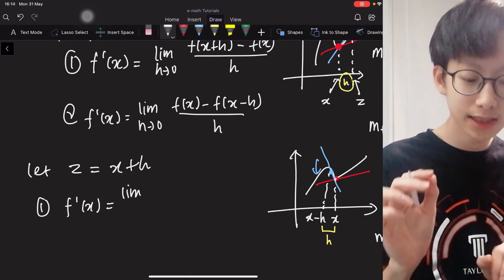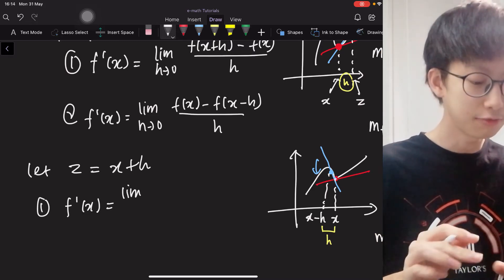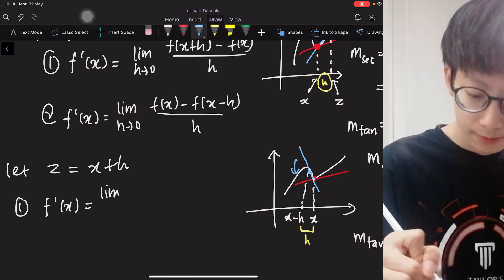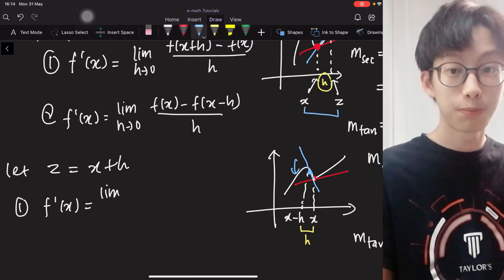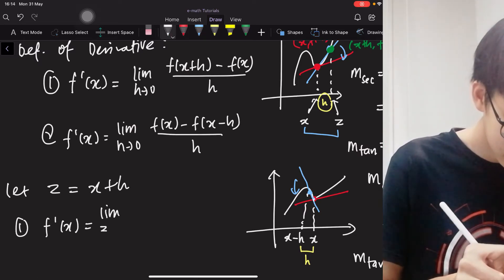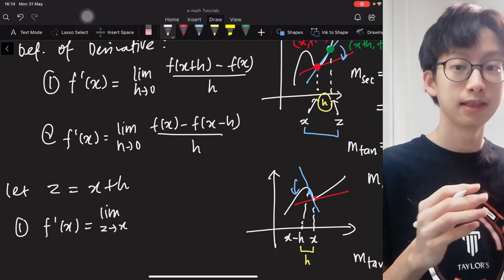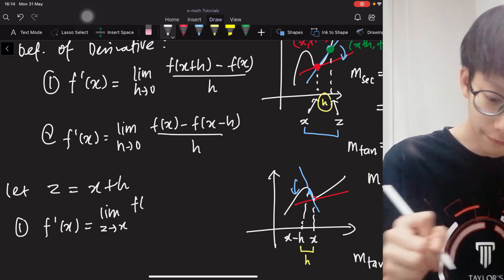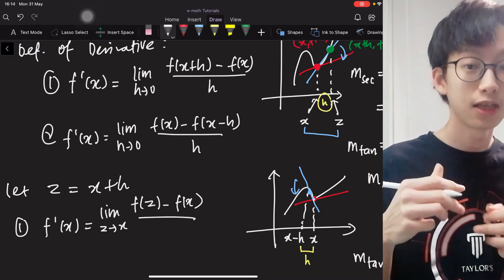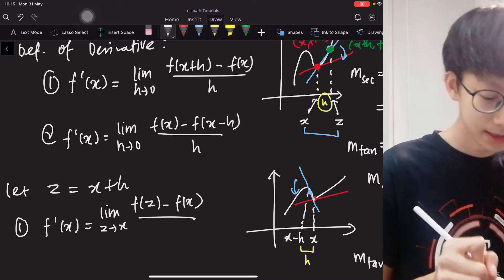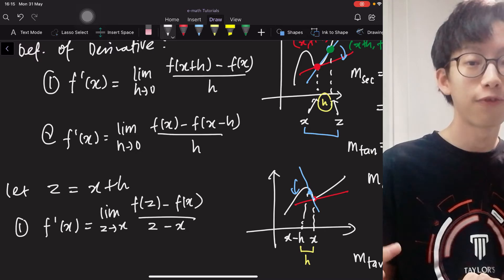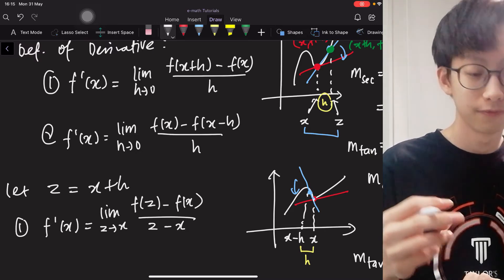because now we are trying to eliminate h, we are saying that z is approaching x. z is approaching x, so we write z approaches x as the limit here, and then f(z) minus f(x) over, instead of writing h, we write z minus x. So this is an alternative formula for the first definition of derivative.